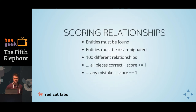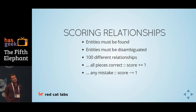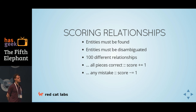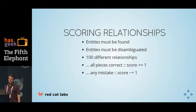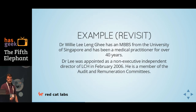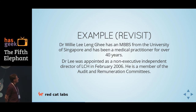On scoring: the scoring of a relationship means you have to find the entities, then you have to disambiguate the entities. They have 100 different relationships, and only if you get all the pieces correct in this tuple do you score one. Any mistake you make will actually be negative against you, because the F1 score means that if you guess something incorrectly — it's not in the set they're looking for — you're going to be penalized for it. So let's see roughly where we could be in this text.